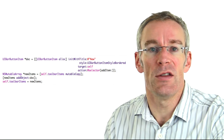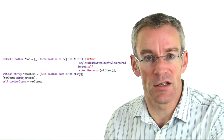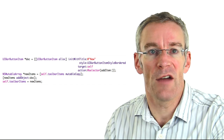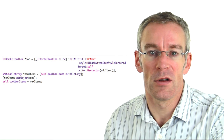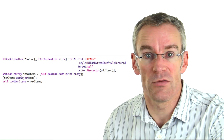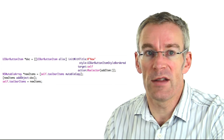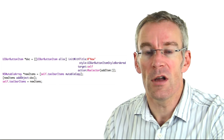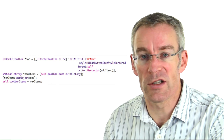We can add and remove bar button items using the storyboard, and also add and remove items at runtime. Once we've added a toolbar to a view we have a special property called toolbarItems, which is an NSArray containing an array of bar button items, meaning we can add new ones and delete existing ones. To do that we have to create a mutable copy of the NSArray because NSArrays can't be changed. We then add or remove the items from our mutable copy and assign that as the new toolbarItems array property.